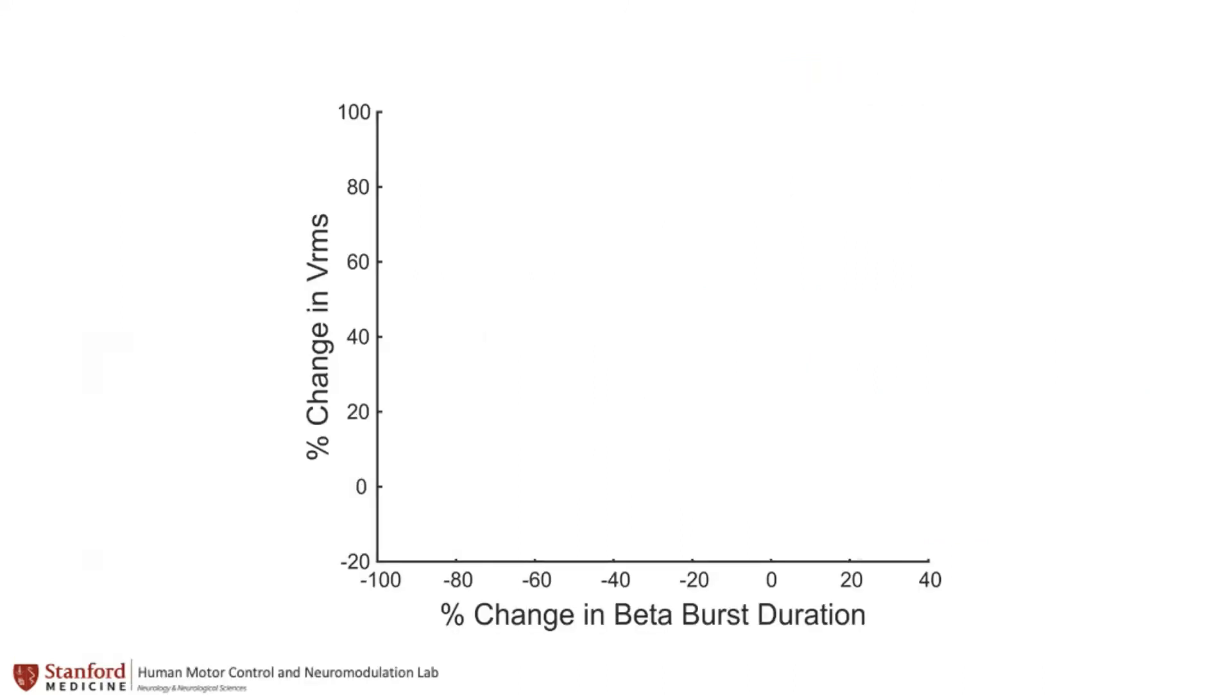When we compared the improvement in bradykinesia to the change in average beta burst durations, we saw that greater improvements in bradykinesia with stimulation was associated with shortening of beta bursts.